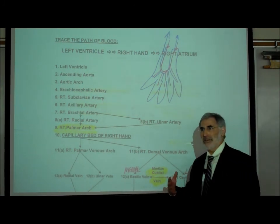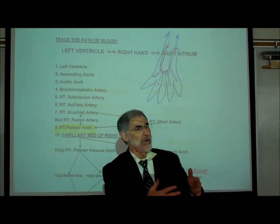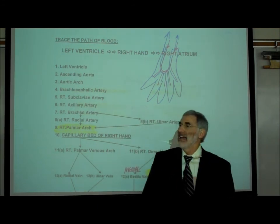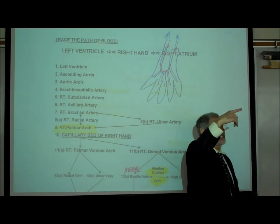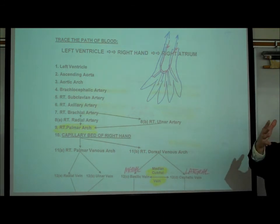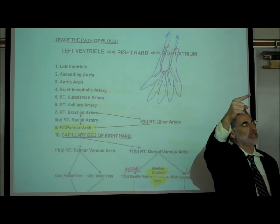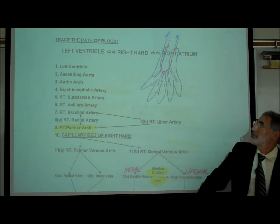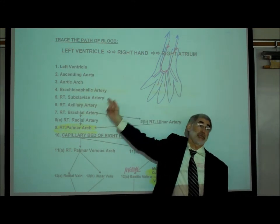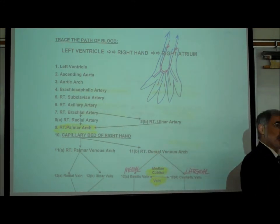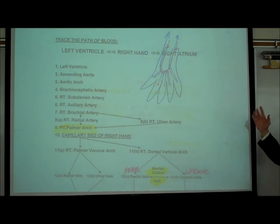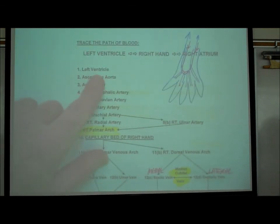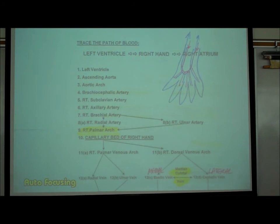A map quest tells you which streets or freeways to take to get from point A to point B — it doesn't list every single freeway in Los Angeles. So we want to go from the left ventricle to the right hand. We obviously start with the left ventricle. That's where we are.